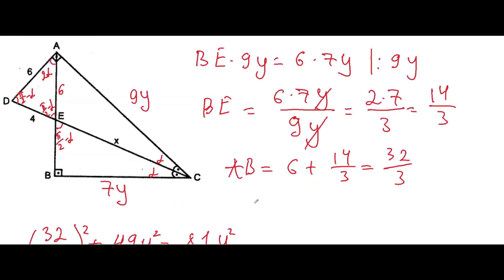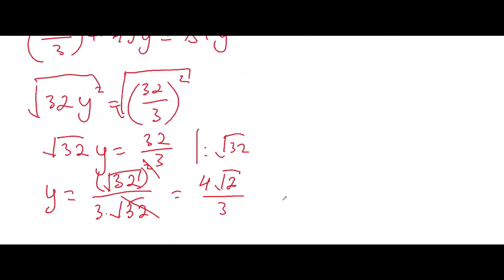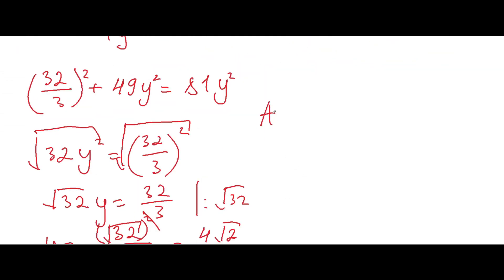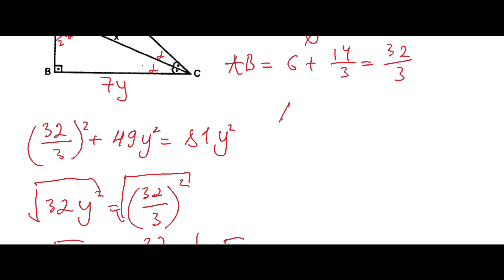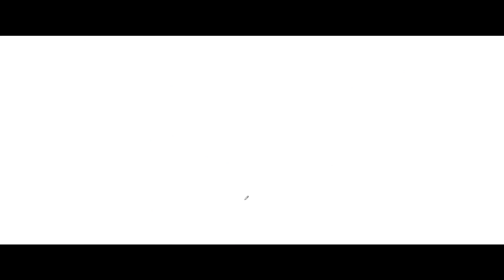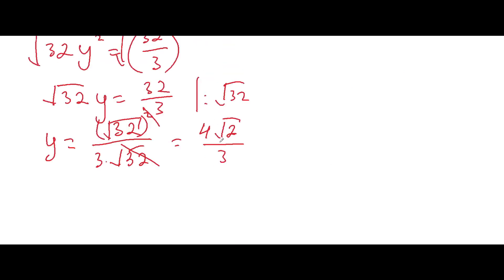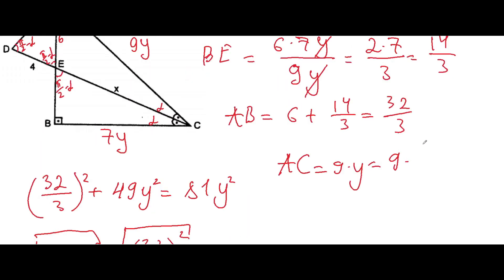We found y and in order to find out x, we have to find out the AC side. AC is 9 times y and we can plug the value that we found 9 times 4 square root of 2 over 3. And we can get here 12 square root of 2.